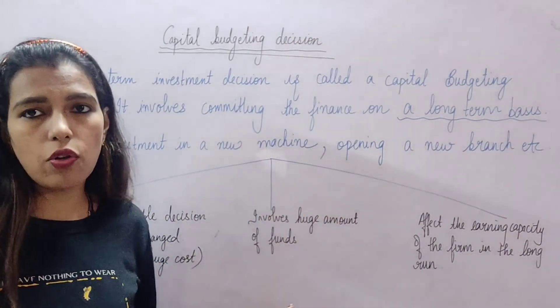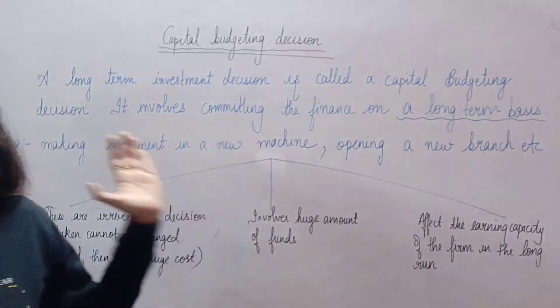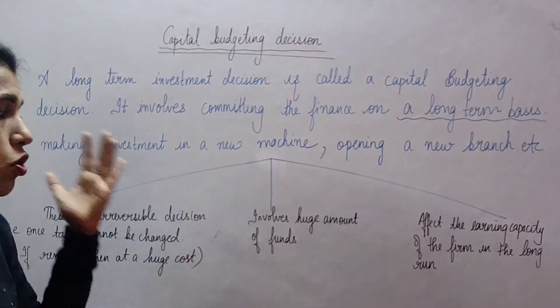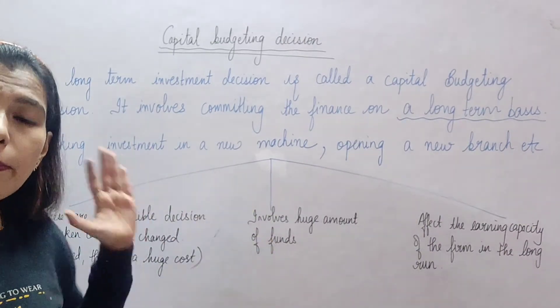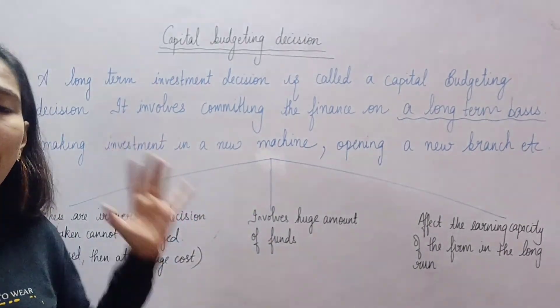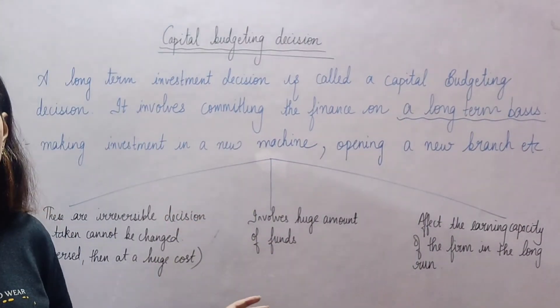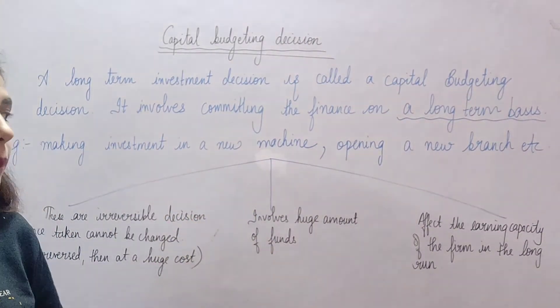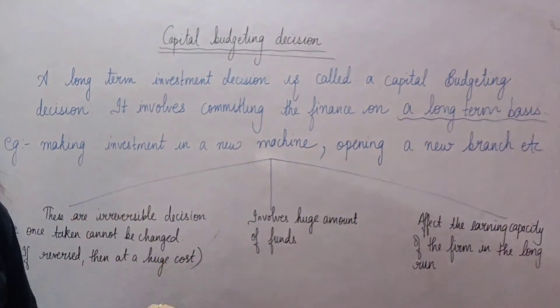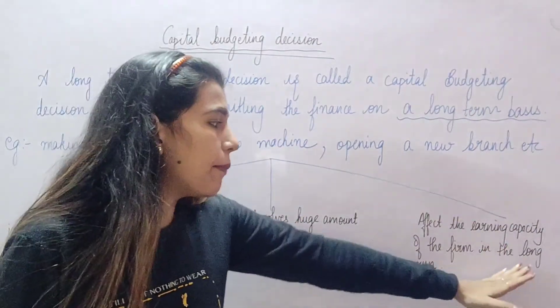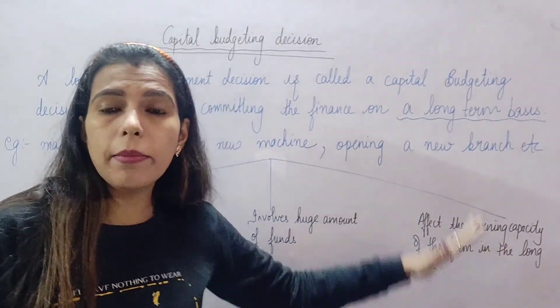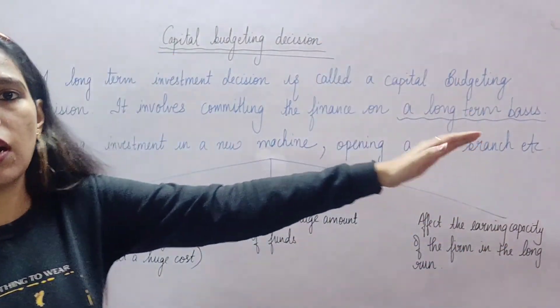Second point: capital budgeting decisions involve a huge amount of funds — a very large amount of money is required. Third point: these decisions affect the earning capacity of the firm in the long run.